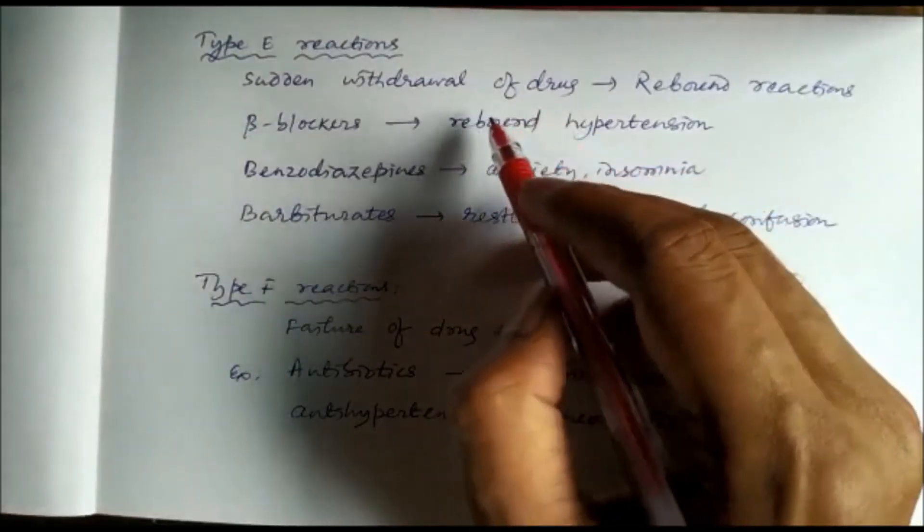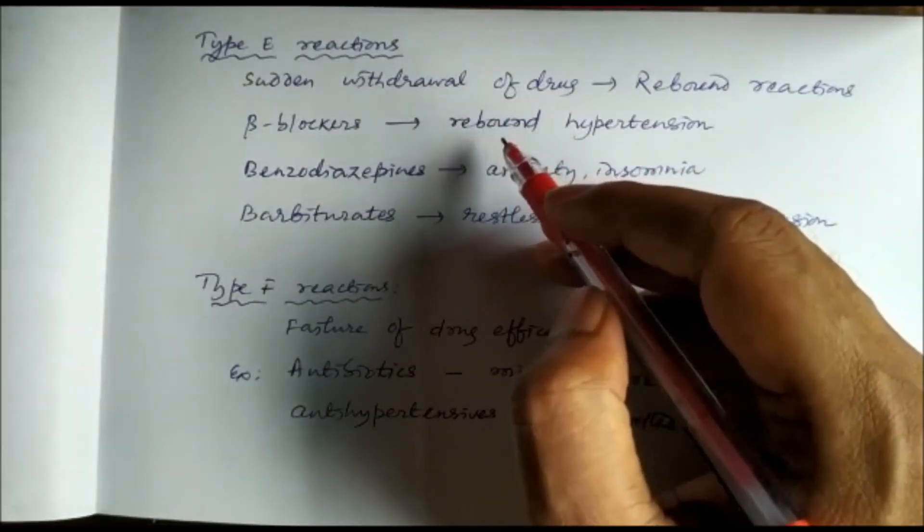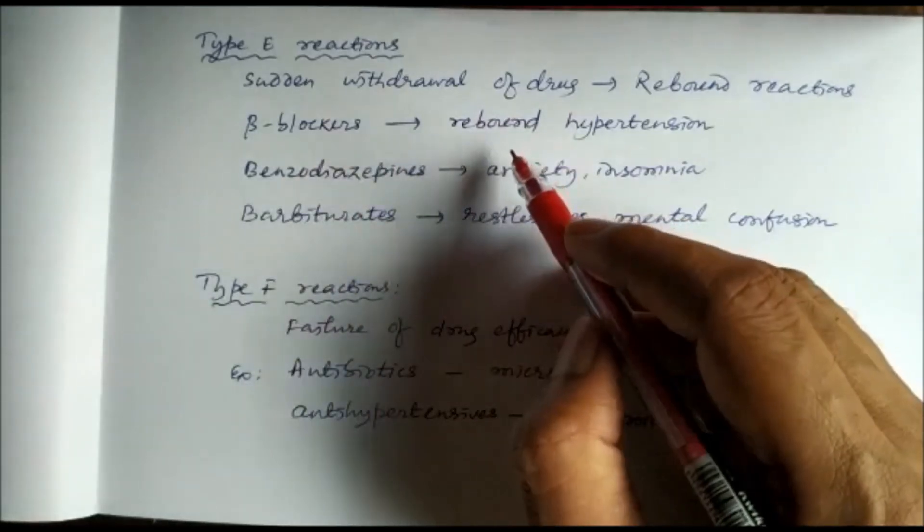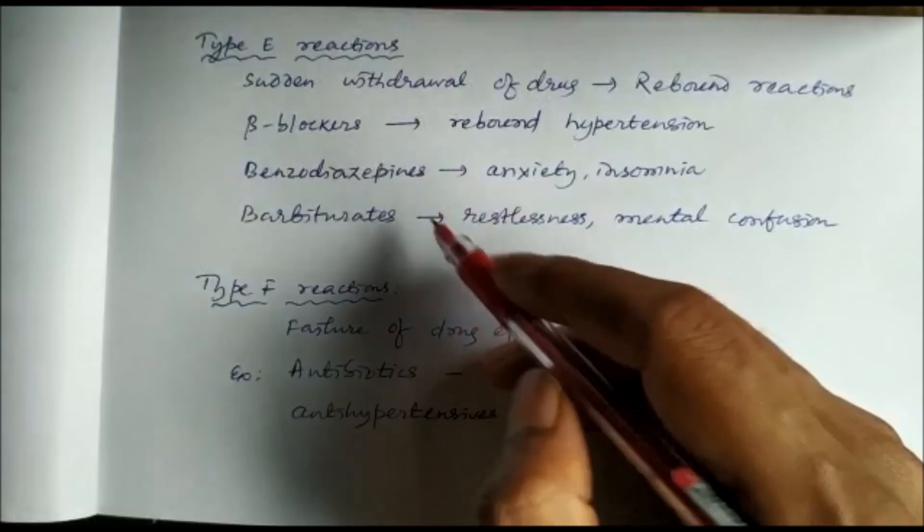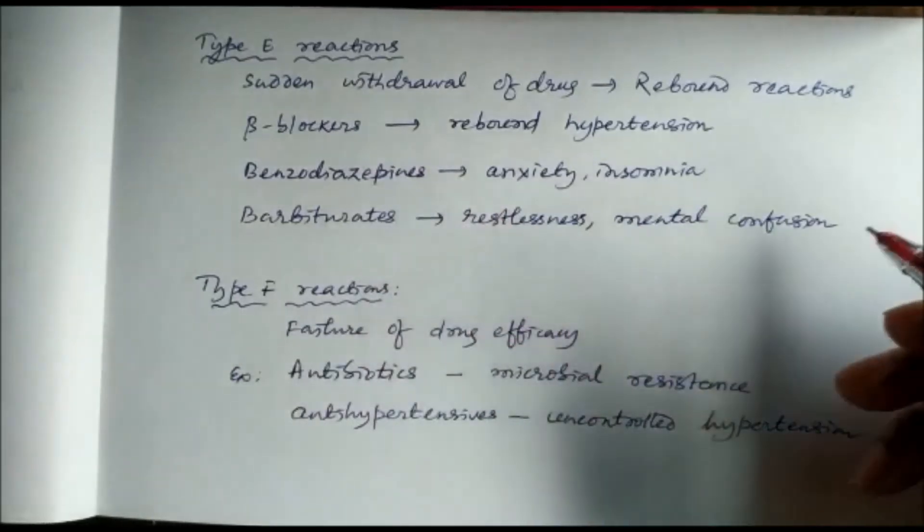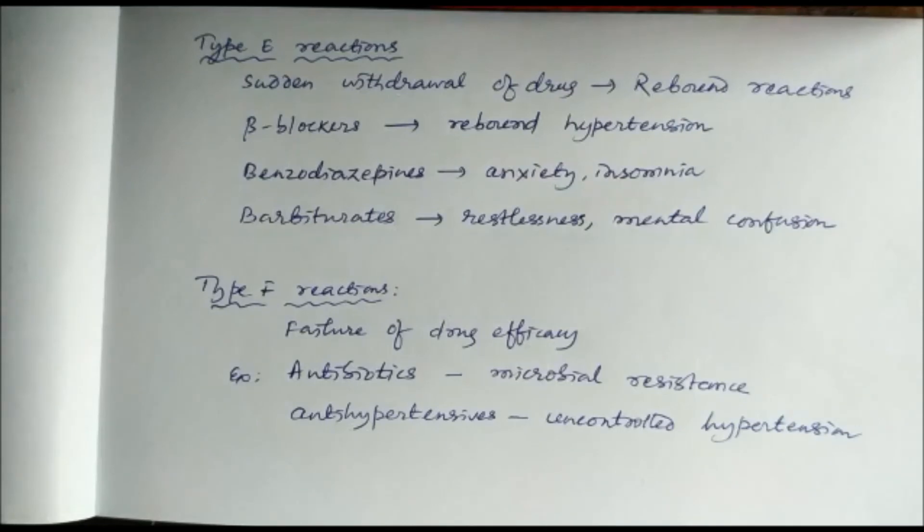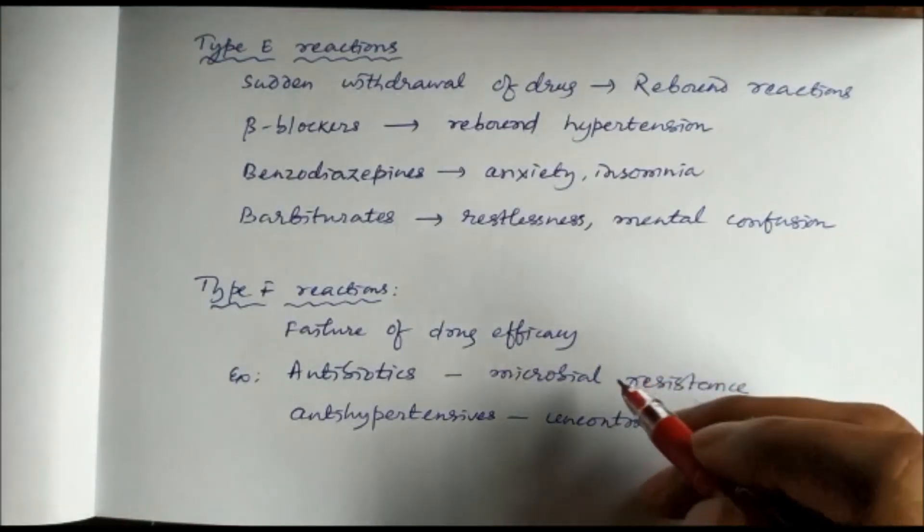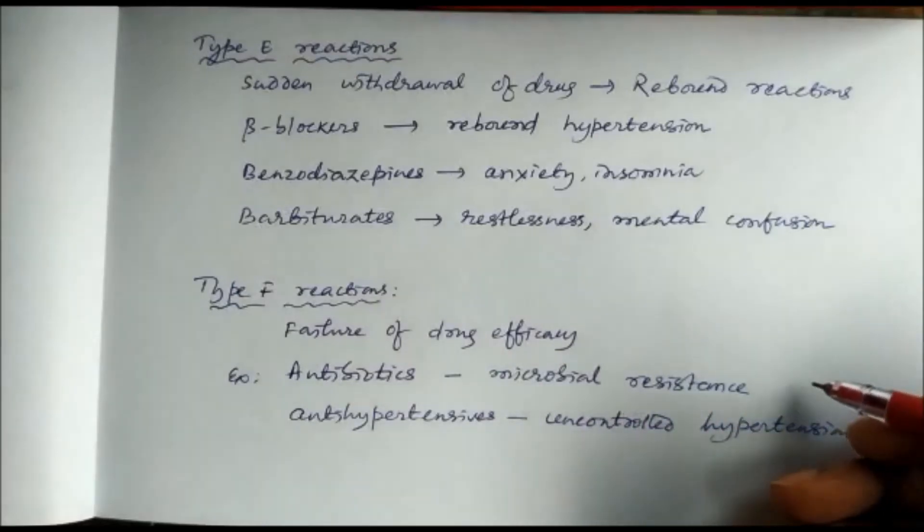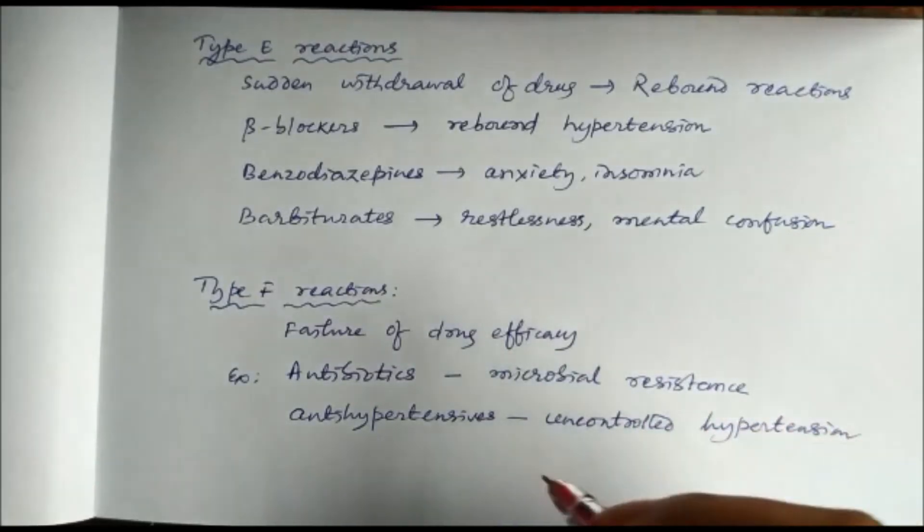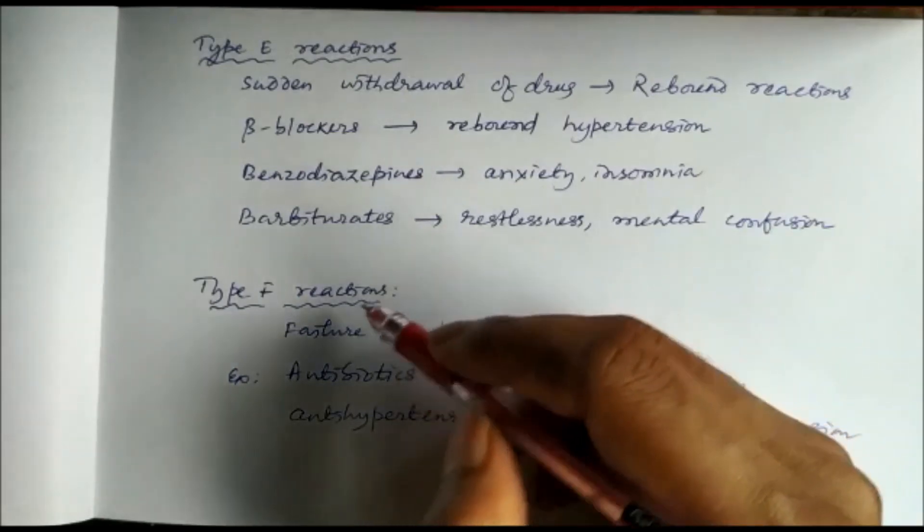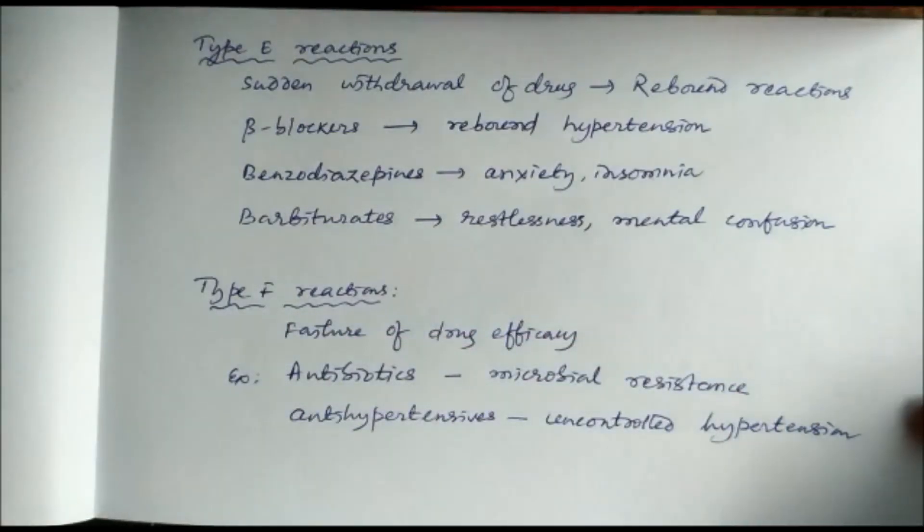Type E adverse drug reactions are caused when we suddenly end the use of the drug. Sudden withdrawal of the drug causes rebound reactions, like beta-blockers, antihypertensive drugs—sudden withdrawal causes rebound hypertension. Benzodiazepines, the anxiolytic and sedatives, sudden withdrawal causes anxiety and insomnia. Barbiturates on sudden withdrawal cause restlessness and mental confusion. There can be Type F adverse drug reactions caused by failure of drug efficacy. Suppose antibiotics failure caused by microbial resistance, and if there is uncontrolled hypertension and we are still using antihypertensives and it is not controlled, then this type of adverse drug reactions are called Type F reactions. This is all about adverse drug reactions. Thank you.